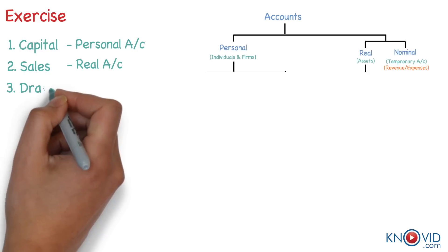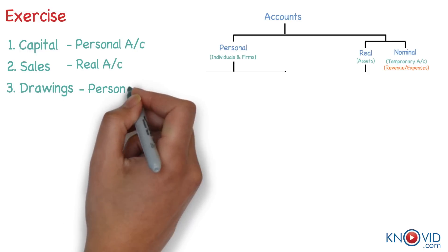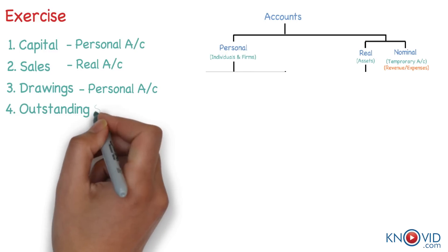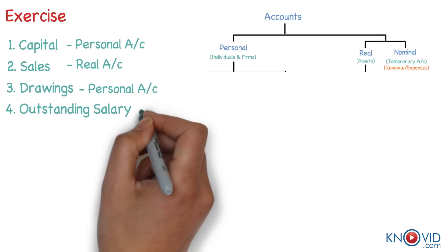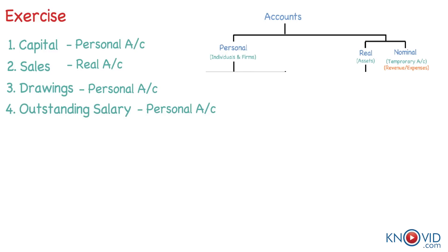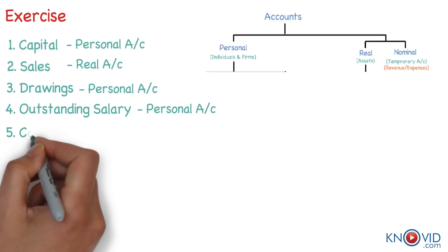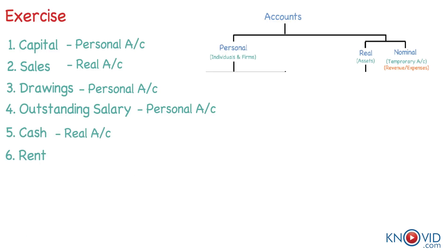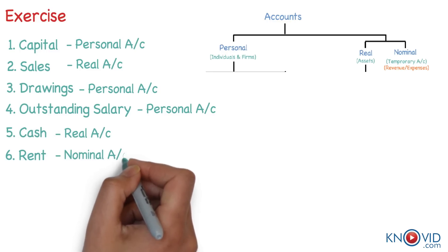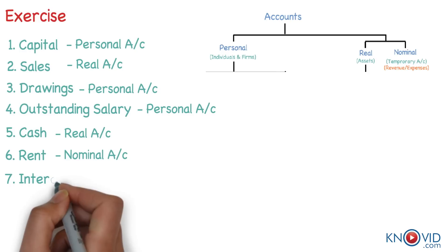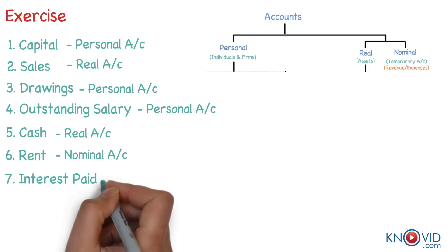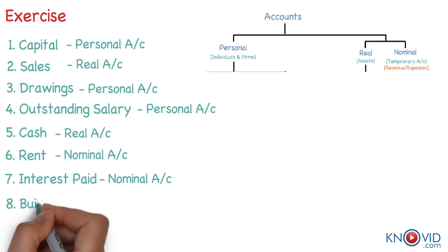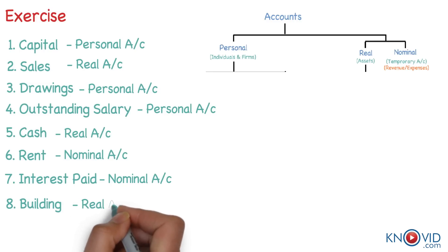Drawings is a personal account. Outstanding salary is a personal account. Cash is a real account. Rent is a nominal account. Interest paid is a nominal account. Building is a real account.